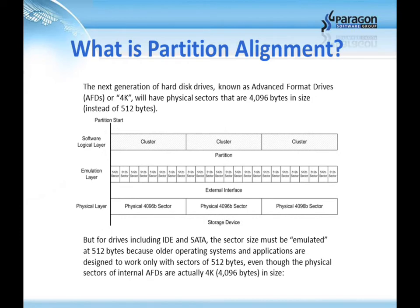The next generation of hard disk drives, also known as advanced format drives or 4K drives, will have physical sectors that are 4096 bytes in size instead of the standard 512 bytes. But for drives including IDE and SATA, the sector size must be emulated at 512 bytes due to older operating systems and programs being designed to work with only 512-byte sectors, even though the physical sectors of an advanced format drive are actually 4096 bytes in size.